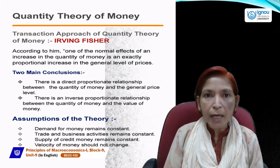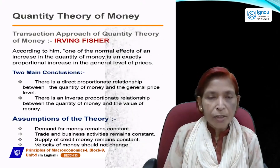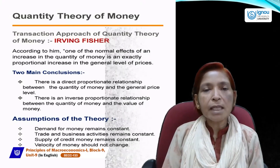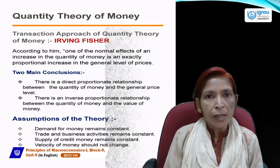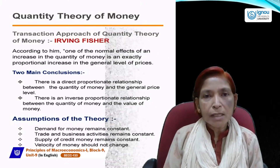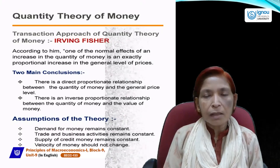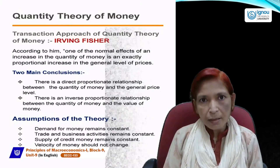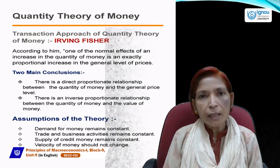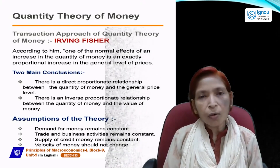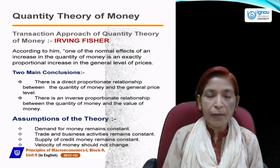Money supply and quantity of money are equivalent concepts. Money supply directly affects the general price level. The value of money refers to the purchasing power of money — how many units of goods and services money can purchase. Whenever price rises, the value of money falls.